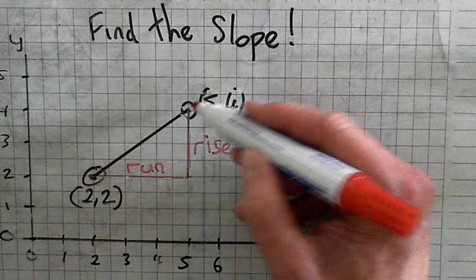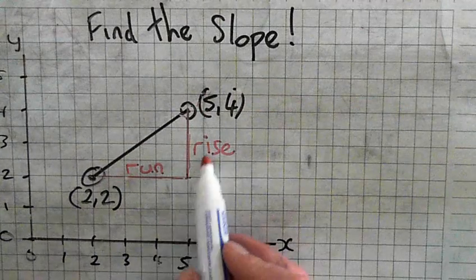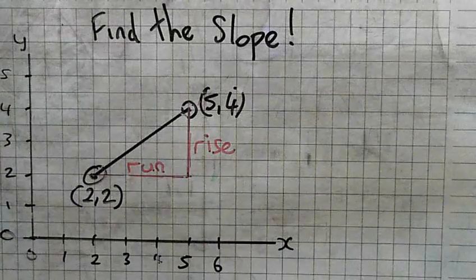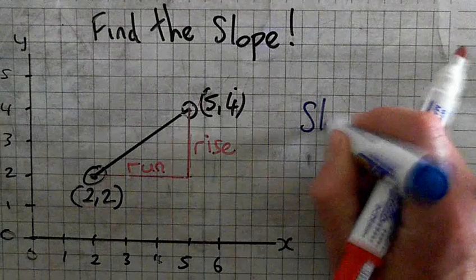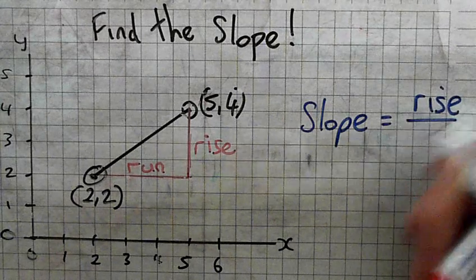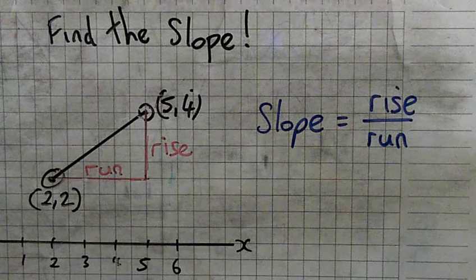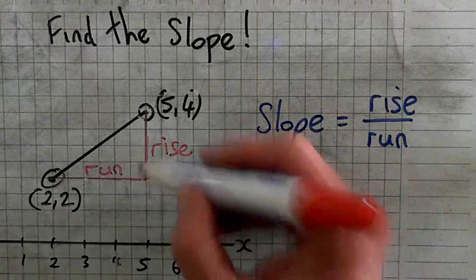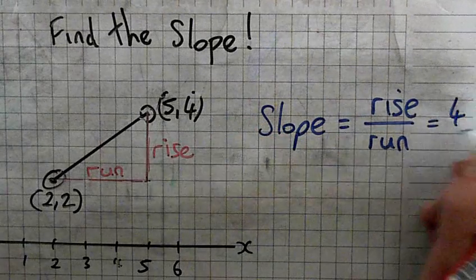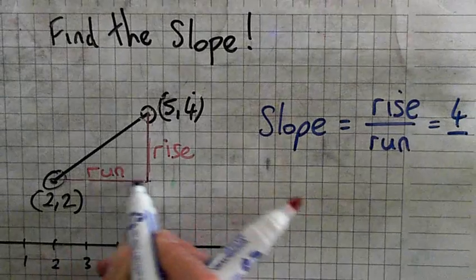Right, so this is called rise and the run. The slope equals the rise over the run. Look at the rise. How many squares high is the rise? Four. Look at...